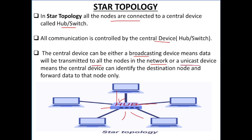Or as a unicast device — agar aap hub ki jagah star topology ke andar switch ko use kar rahe hain, toh switch as a unicast device work karayega. Which means the central device can identify the destination node. Central device destination node ko identify karayega — us node ko identify karayega jiske paas woh data jana hai, jiske paas woh message jana hai. And it will forward the data to that particular node only, sare ke sare devices ko forward nahi karayega.